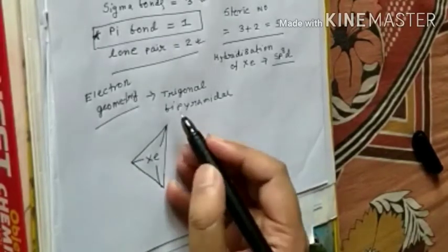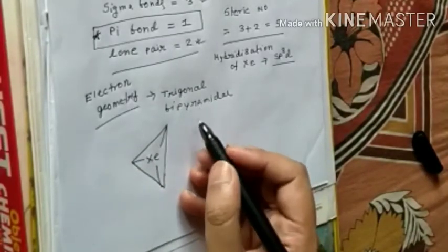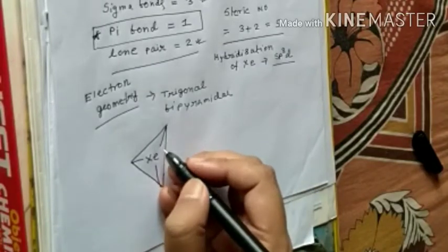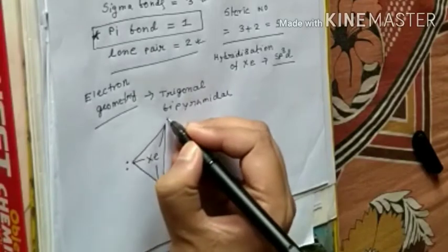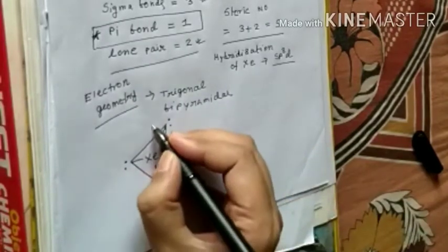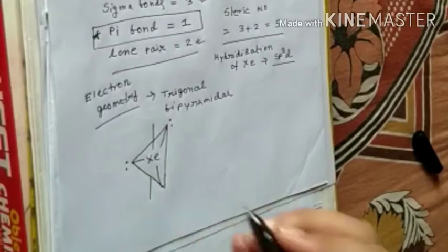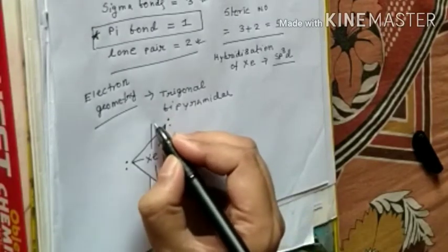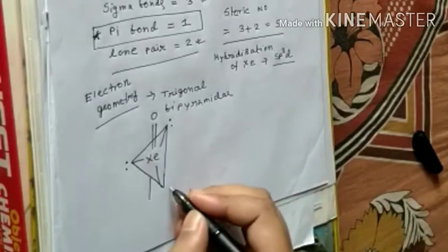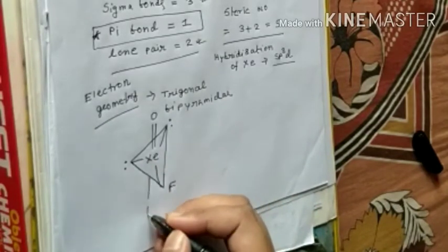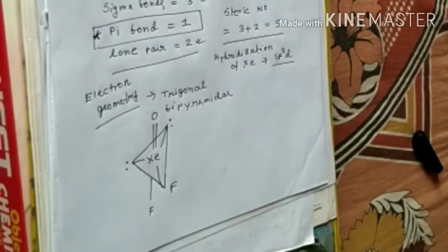In trigonal bipyramidal geometry, the lone pairs are present in equatorial positions. How many lone pairs are there? Two. So one is the double-bonded oxygen, and the other two are fluorine atoms.